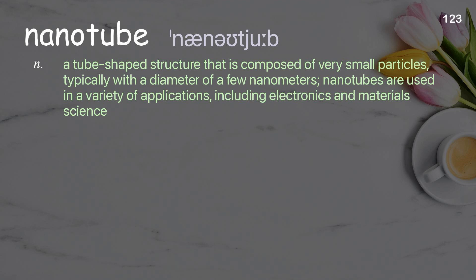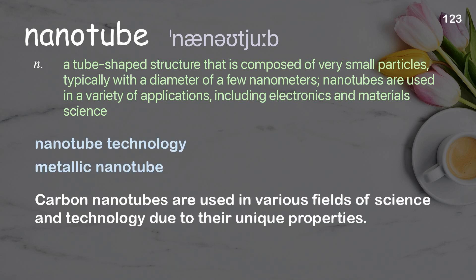Nanotube: a tube-shaped structure that is composed of very small particles, typically with a diameter of a few nanometers. Nanotubes are used in a variety of applications, including electronics and material science. Examples: nanotube technology, metallic nanotube. Carbon nanotubes are used in various fields of science and technology due to their unique properties.